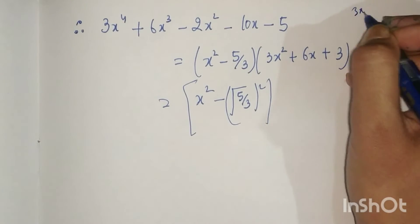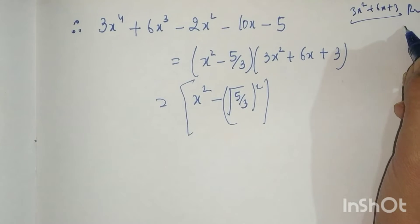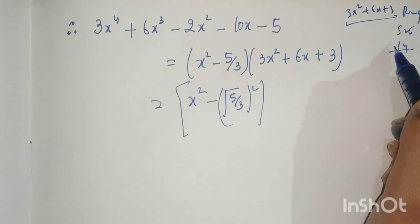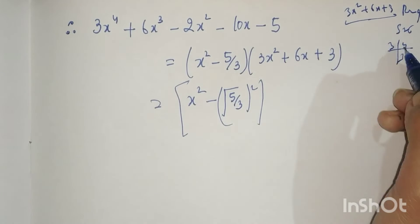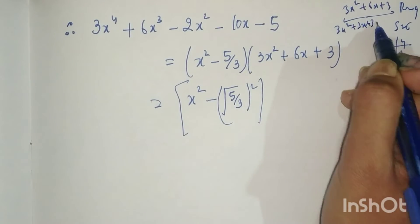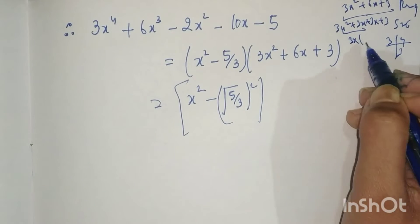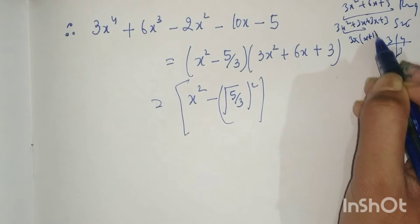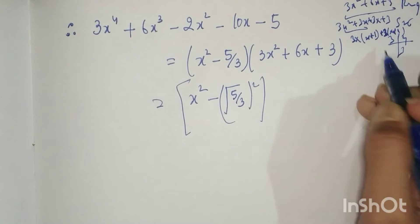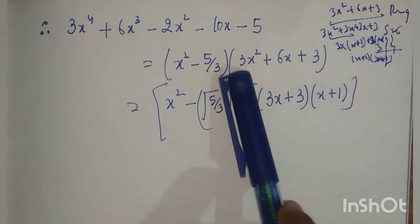Now we have the quadratic polynomial 3x² + 6x + 3. How do we solve this? The product is 3×3 = 9 and the sum is 6. Using factors of 9, we get 3 and 3. So 3x² + 3x + 3x + 3, with common factor 3x gives (3x + 3)(x + 1).